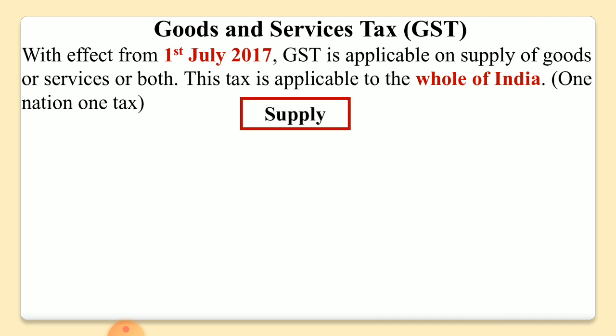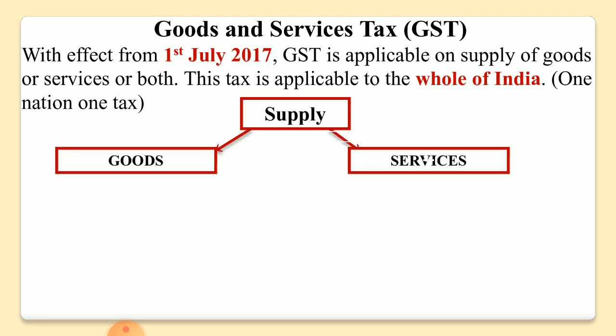GST is applicable on the supply of goods and services. This supply word is very important, because the taxable event under GST is supply. If there is no supply, no GST will be applicable. So we need to understand the difference between goods and services.